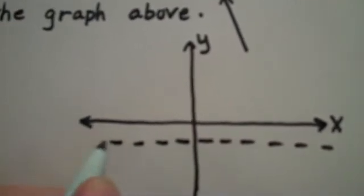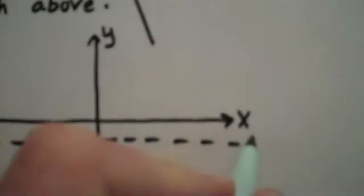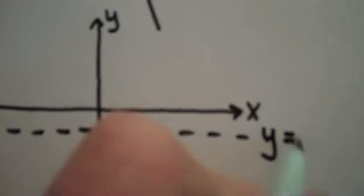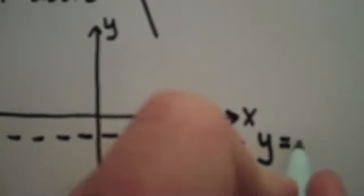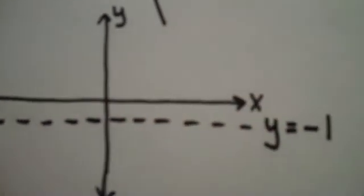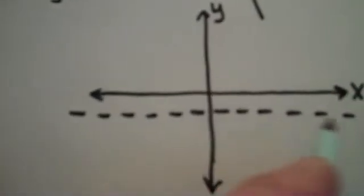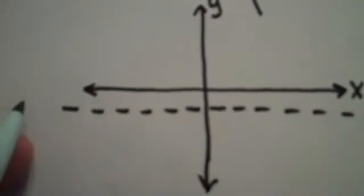The reason you do a broken line when you're drawing asymptotes, the asymptotes are actually not part of the graph, but it's important to see where they are. So the line y equals negative 1 is a horizontal asymptote.